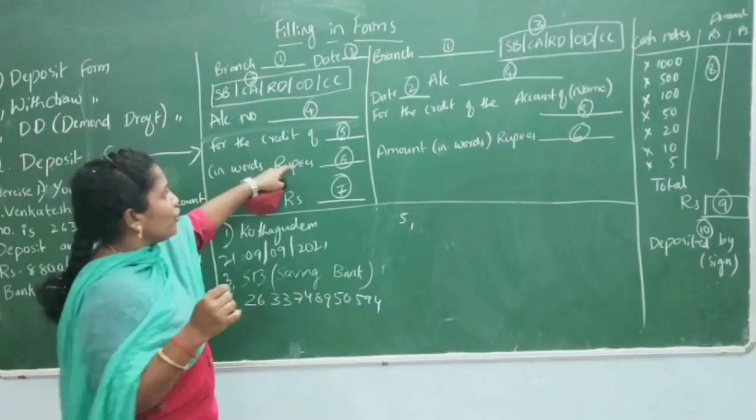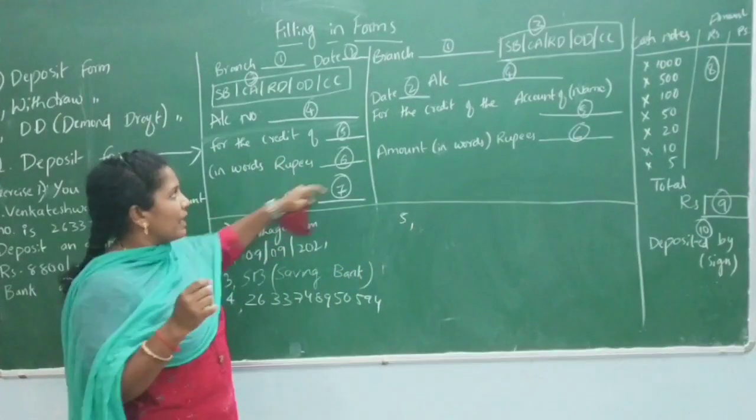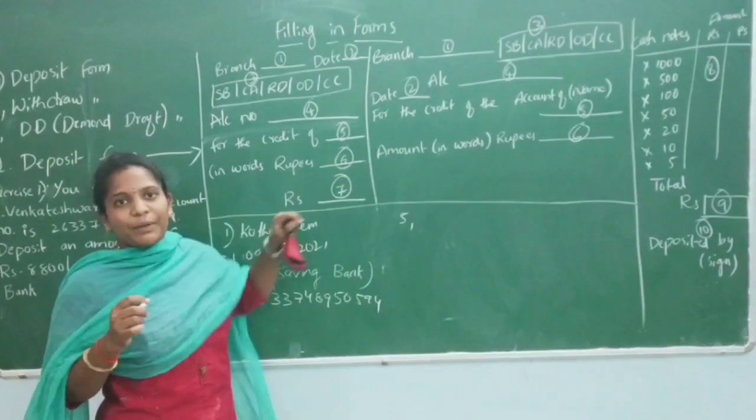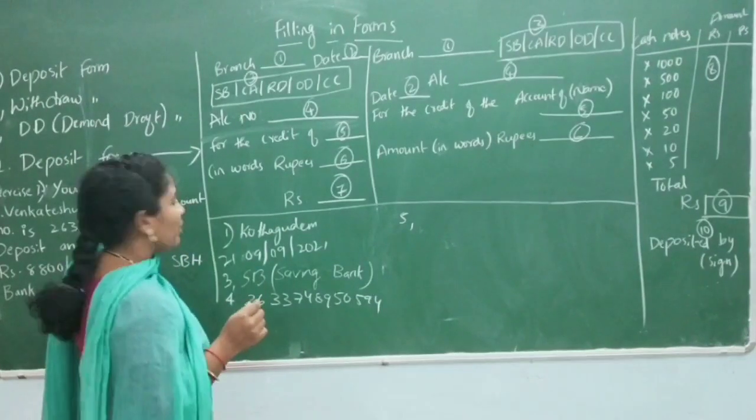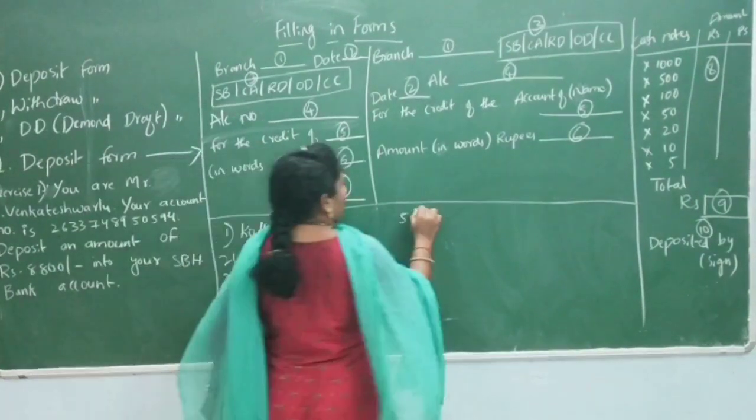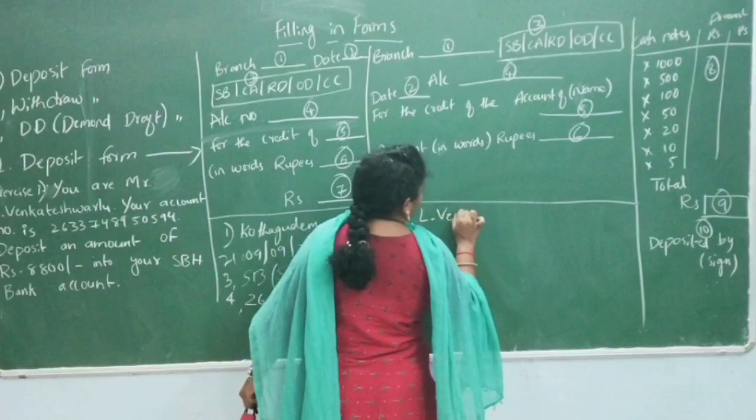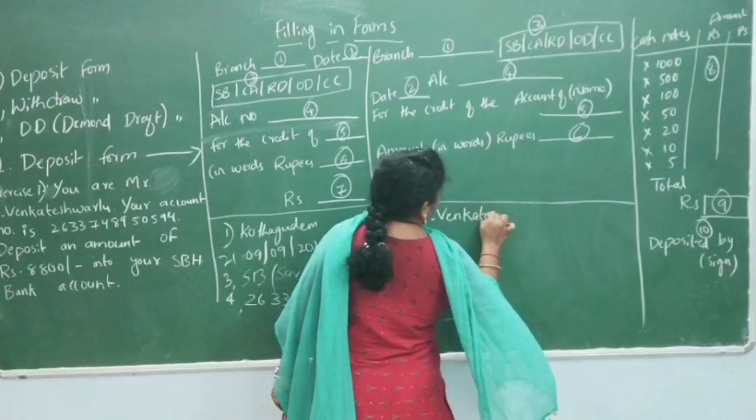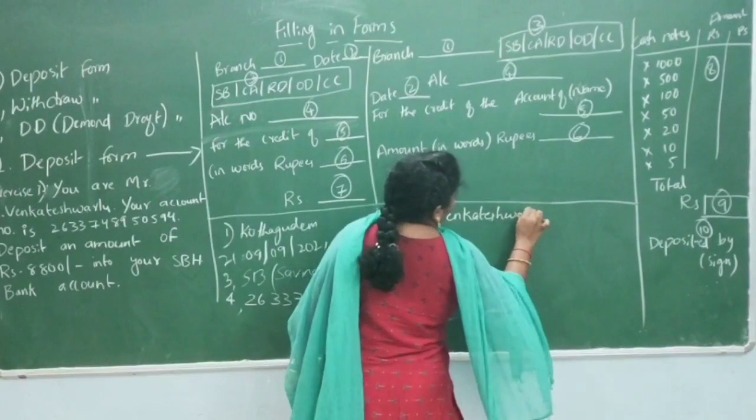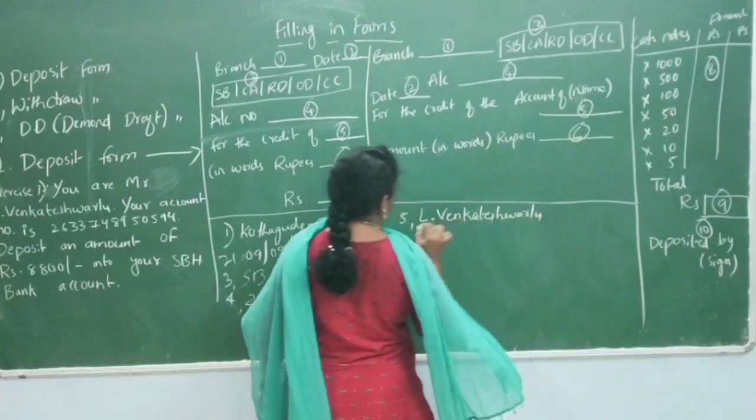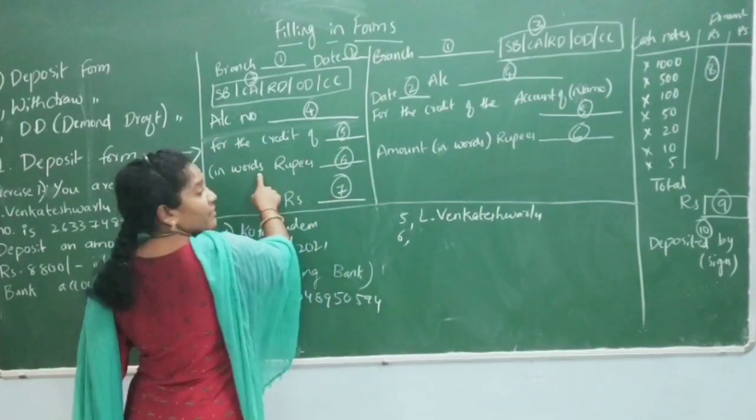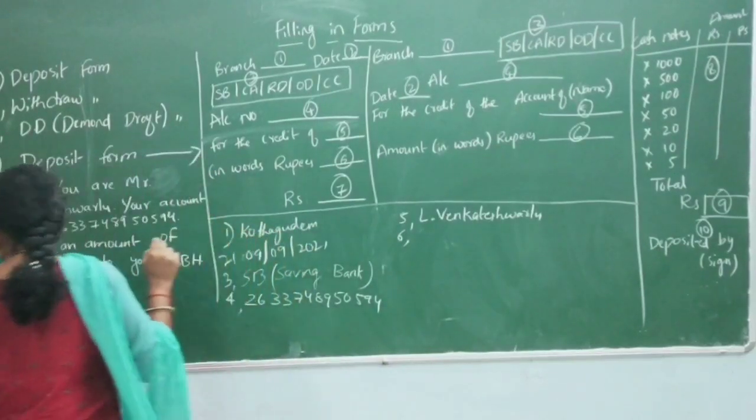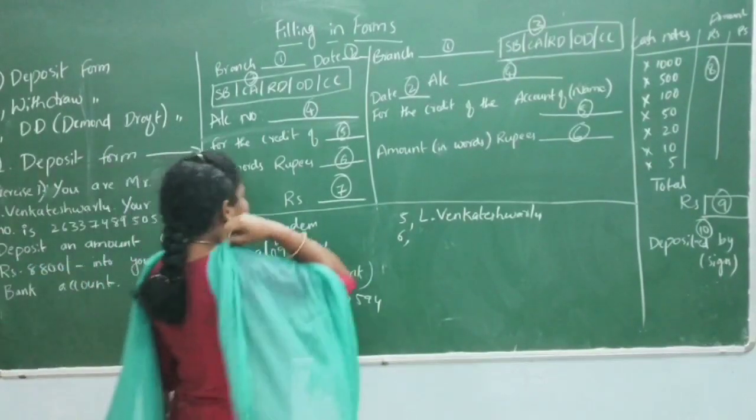For the credit of the account, we write the account holder's name. This shows whose account will receive the deposit. The amount is 8,800 rupees.